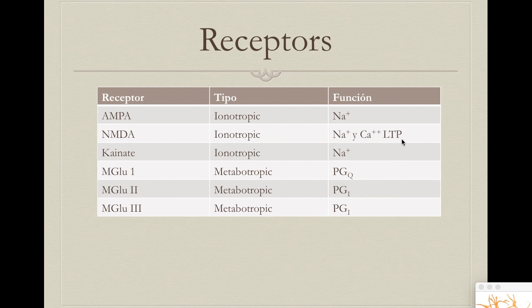To summarize: AMPA and NMDA are both ionotropic receptors. AMPA is permeable mainly to sodium. NMDA is permeable mainly to sodium and calcium, and is mainly responsible for LTP — the strengthening of synapses that causes memory and pain. We also have another ionotropic receptor called kainate. This has not been studied as extensively; it is permeable to sodium like AMPA receptors, but we don't know its full function yet.